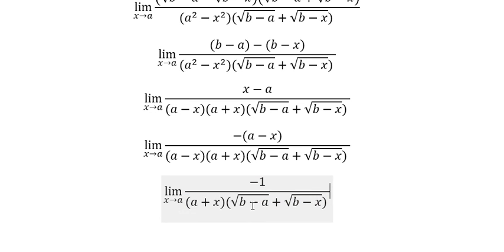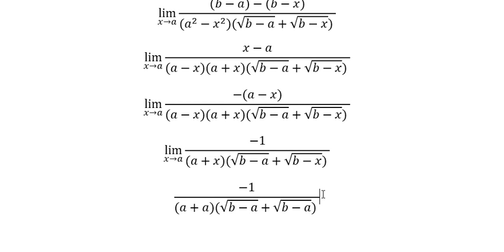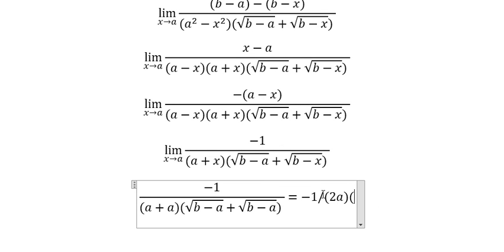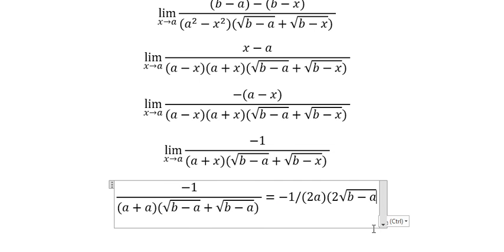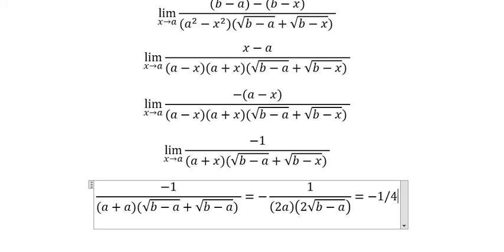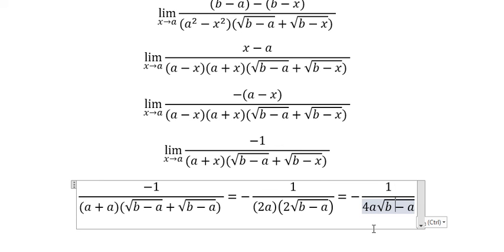Next, I will put a in here and here. And now we got the final answer: negative one over (4a) multiplied with the square root of (b minus a).